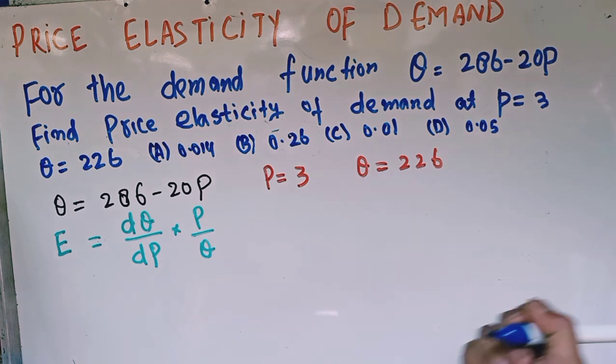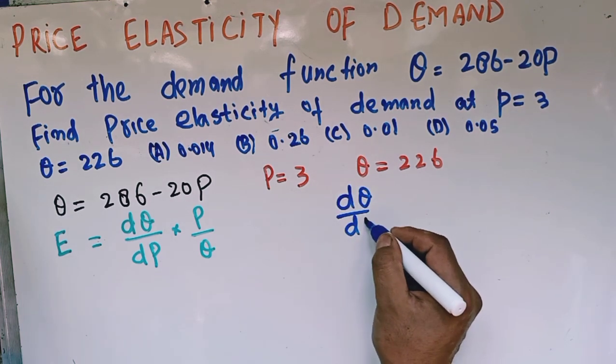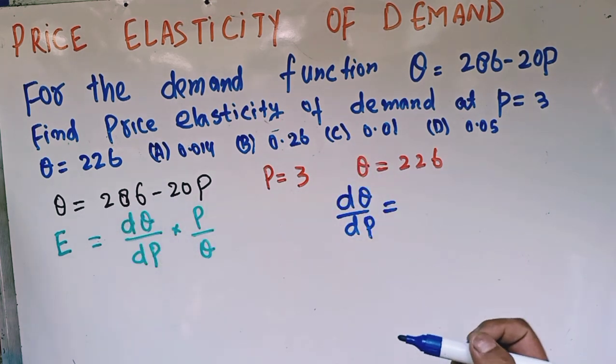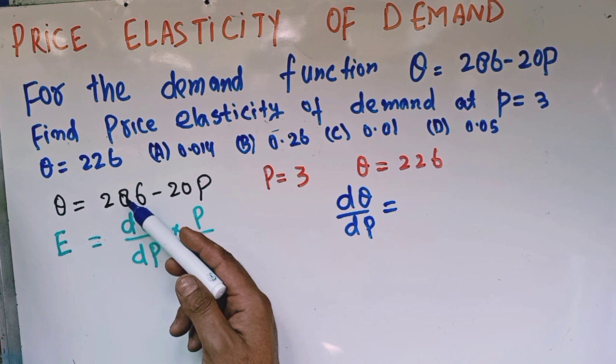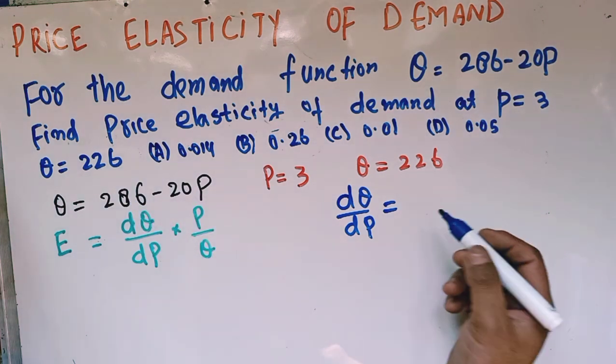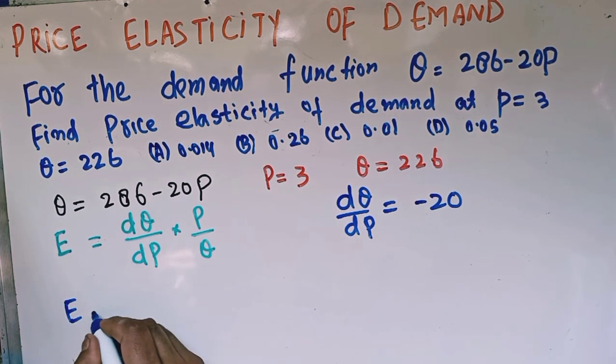dQ upon dP is the derivative of the demand function with respect to price. The derivative of a constant is 0, derivative of P is 1, so we are left with minus 20. Then elasticity will be equal to...